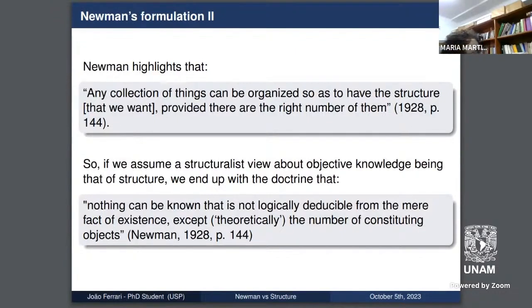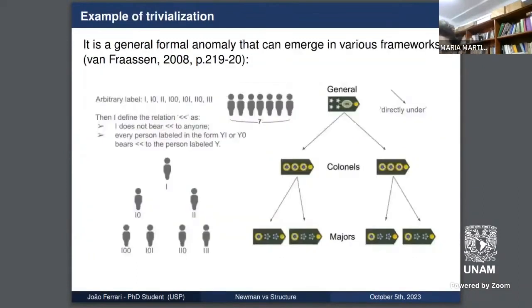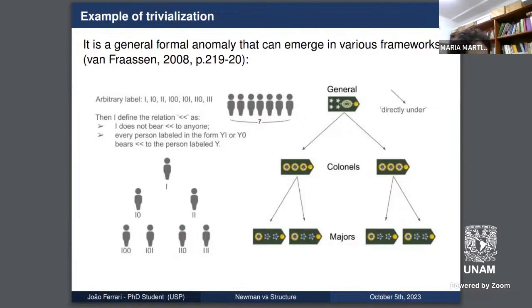The objection is formulated in very general terms, so it's not framework-specific. I bring one example from Van Fraassen to illustrate this. Suppose you have seven neighbors. I say they instantiate a model structure — a regionally hierarchical social structure. In this model we have seven elements and a 'directly under' relation, representable by a military hierarchy: a general with two colonels under them, and under each colonel, two majors. I define a relation using a symbol with the same properties as 'directly under', and I arbitrarily label my neighbors with binary strings.